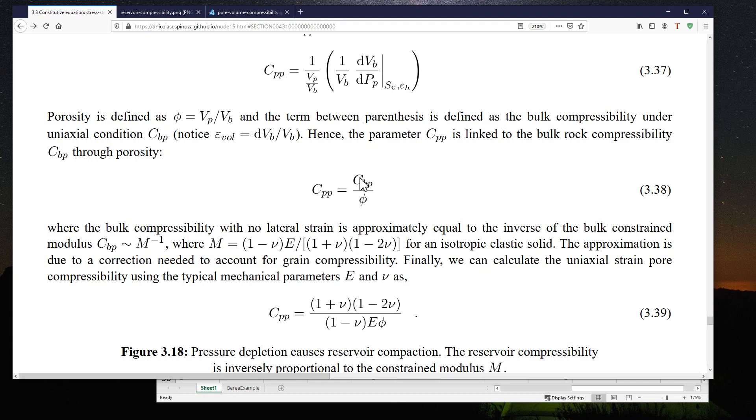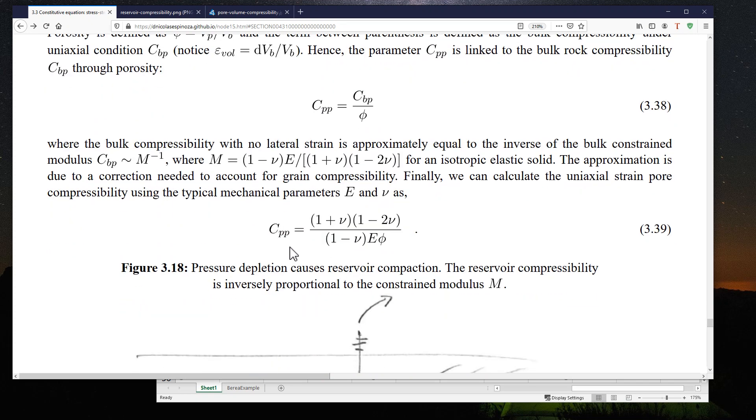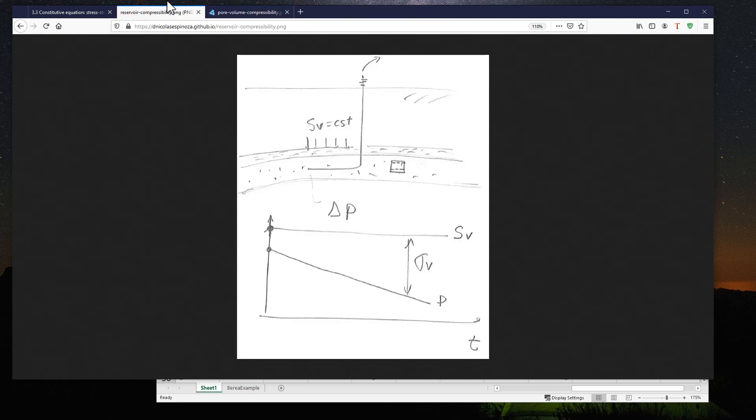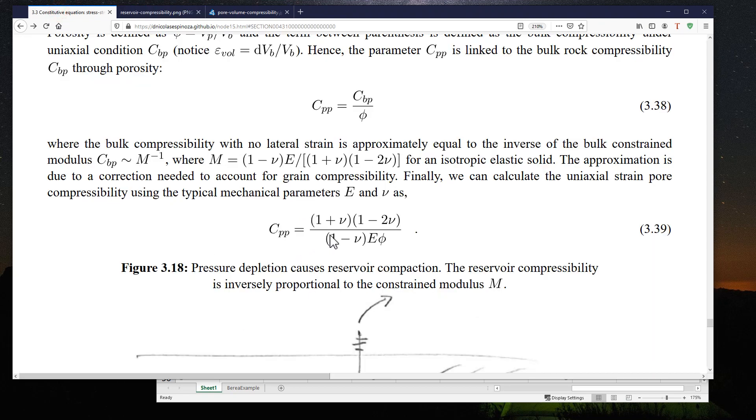So if we have the bulk compressibility of the rock and we have the porosity, we can estimate what is the pore volume compressibility. Sometimes known also in practice as PVC, pore volume compressibility, and here we have a U because this is the uniaxial pore volume compressibility. And it's going to be equal to the equation that we have over here, 3.39, which is a function of the Poisson ratio, the Young modulus and porosity.